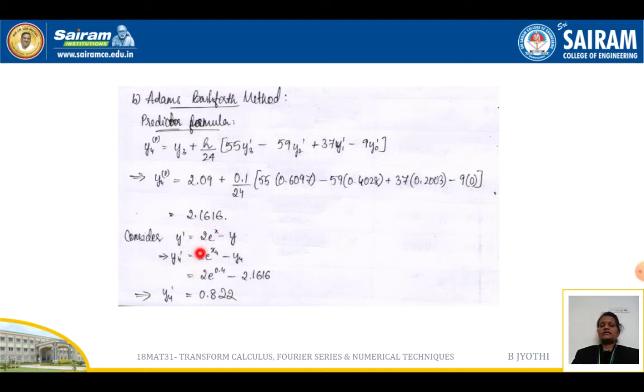Now y' is given by 2e^x - y. Let us compute y₄ dash: 2e^(x₄) - y₄, which on simplification gives 0.822.